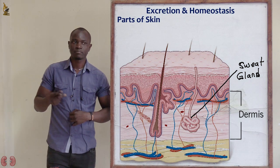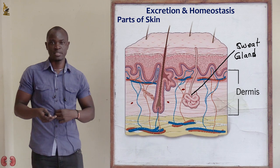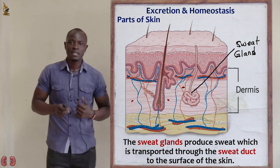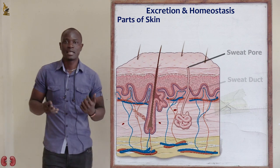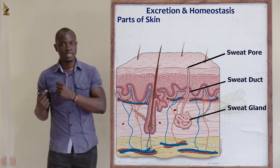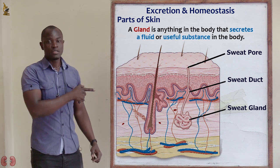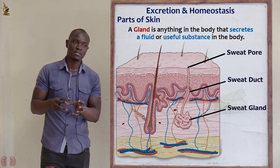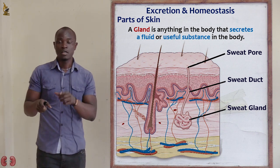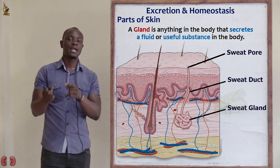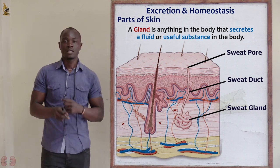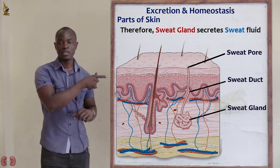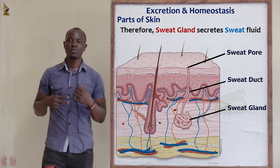Let's begin with the first structure of the dermis, which is the sweat gland. Sweat glands are mainly made up of coil tubes of secretory cells that extend into long tubes on the surface of the skin. A gland is something that secretes a fluid used somewhere else, so the function of the sweat gland is to produce or secrete sweat.